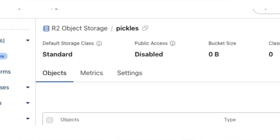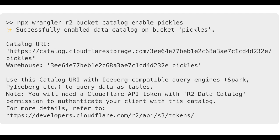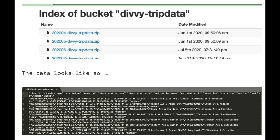Here is my Cloudflare R2 data bucket. If you're unfamiliar with data storage on Cloudflare, go ahead and Google that — it's pretty much similar to S3, you can set up buckets, have storage, etc. Once you have a Cloudflare bucket set up, you can enable the data catalog on that bucket, which enables an Iceberg catalog with a URI. We're going to use the Divvy bike trip open source dataset — it's just a bunch of information about bike rides: ride ID, ride type, started at, ended at, and so on.